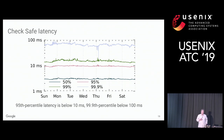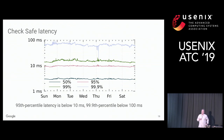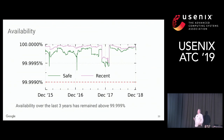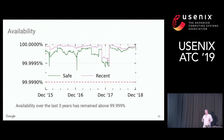In terms of latency — one of our major goals — we are very proud to serve check responses in less than 10 milliseconds at the 95th percentile and less than 100 milliseconds at the 99.9th percentile. For availability, we've maintained over 99.999 percent over the last three years. You can see that around New Year's each year the system takes a small dip, but it remains well above 99.99 percent.